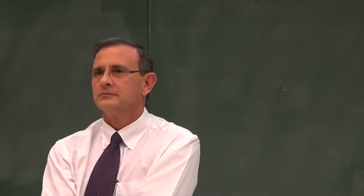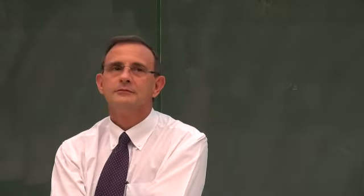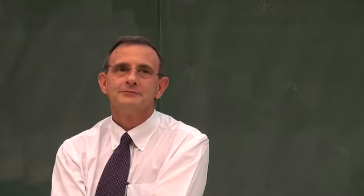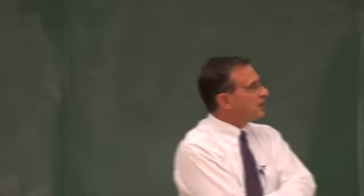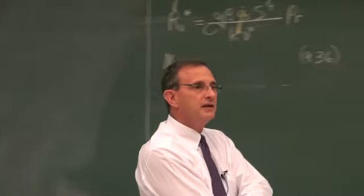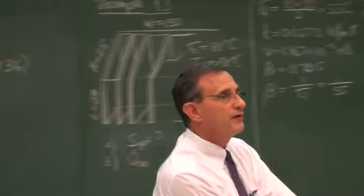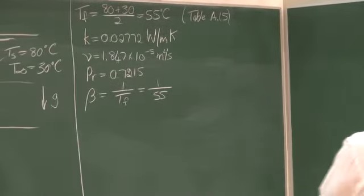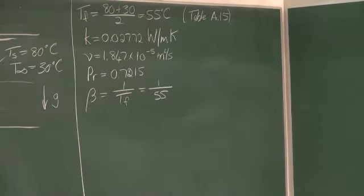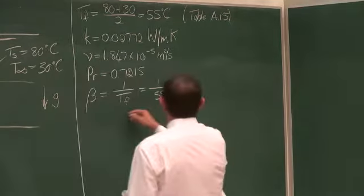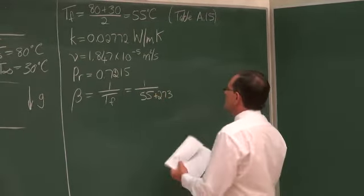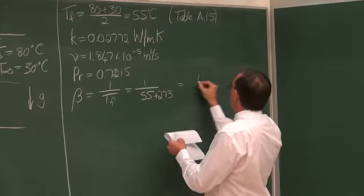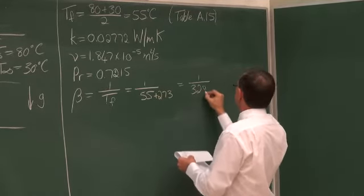Are you all happy with that? You shouldn't be — a classical mistake. β, which is 1 divided by the film temperature, should be in Kelvin. So it is equal to 1 divided by 328 K.